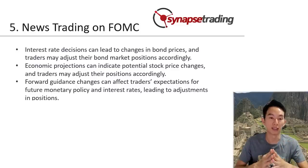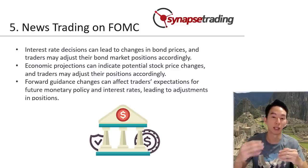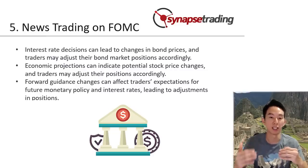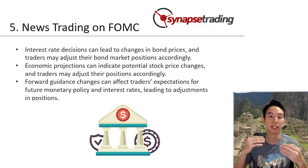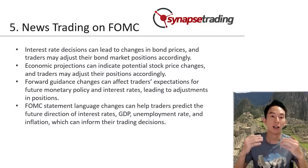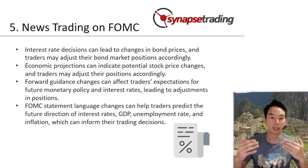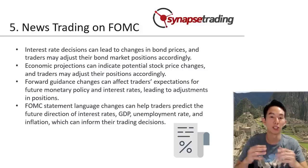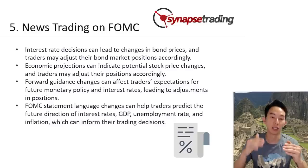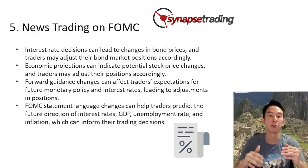Number three: forward guidance. If the FOMC changes its forward guidance, this can affect traders' expectations for future monetary policy and interest rates. For example, if the FOMC signals that it plans to raise interest rates in the near future, traders may anticipate that it will cause bond prices to fall. Number four: statement language changes. The FOMC statement language changes can indicate the committee's attitude towards the economy, inflation, and monetary policy. Traders can use this information to make predictions about the future direction of interest rates, GDP, unemployment rate, and inflation, which can help them make their trading decisions.